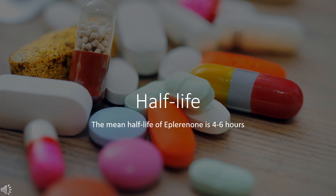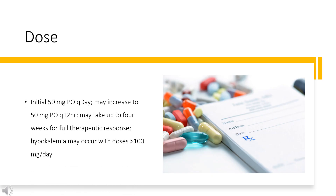Half-life: 4–6 hours. Dose — Hypertension (HTN): Initial 50 mg orally once daily; may increase to 50 mg twice daily; may take up to 4 weeks for full therapeutic response; hypokalemia may occur with doses greater than 100 mg per day. Heart Failure Post-MI: Initial 25 mg orally once daily; may titrate to a maximum of 50 mg once daily within 4 weeks as tolerated. Dose adjustments may be required based on potassium levels.